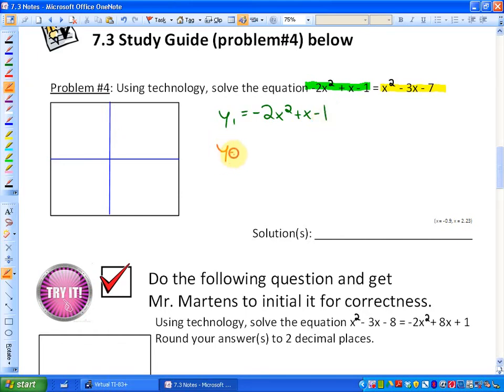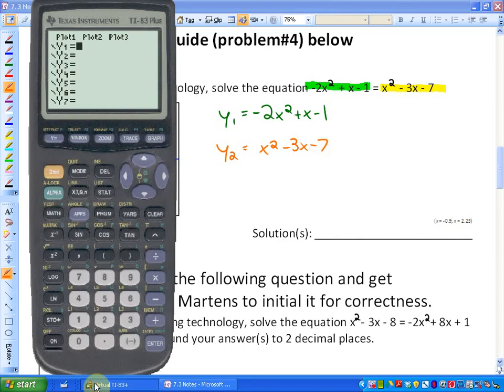We're going to graph that as a function, and in y2 we're going to graph the right side of the equation, and we're going to see what those two functions look like. So left side: -2x² + x - 1. Again, you're going to want to do this along with me to make sure you're getting it right and understanding the concept.